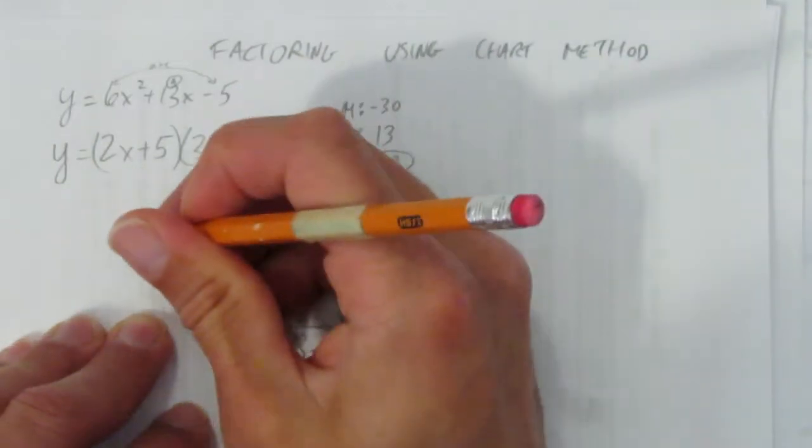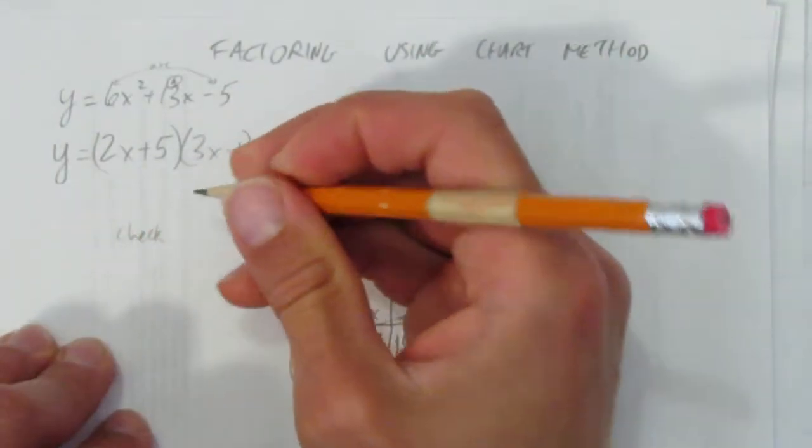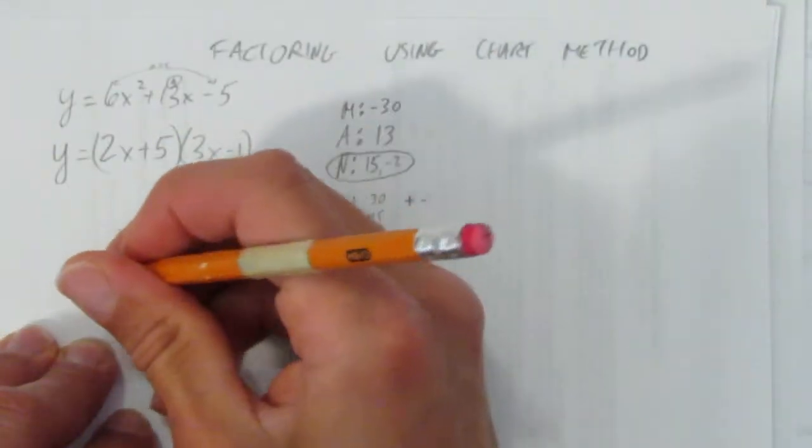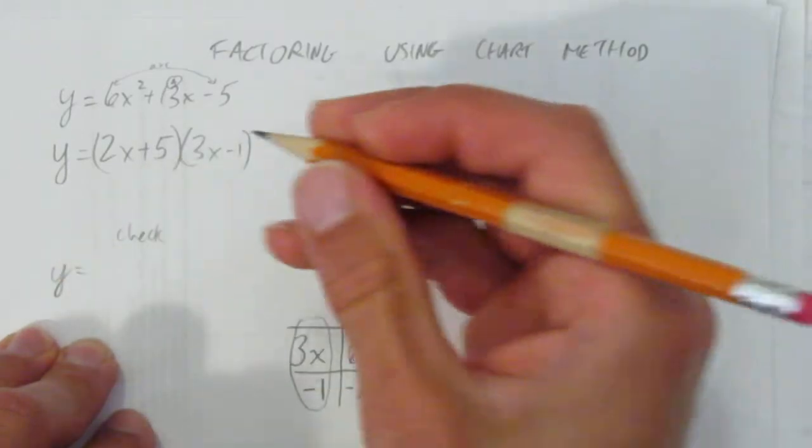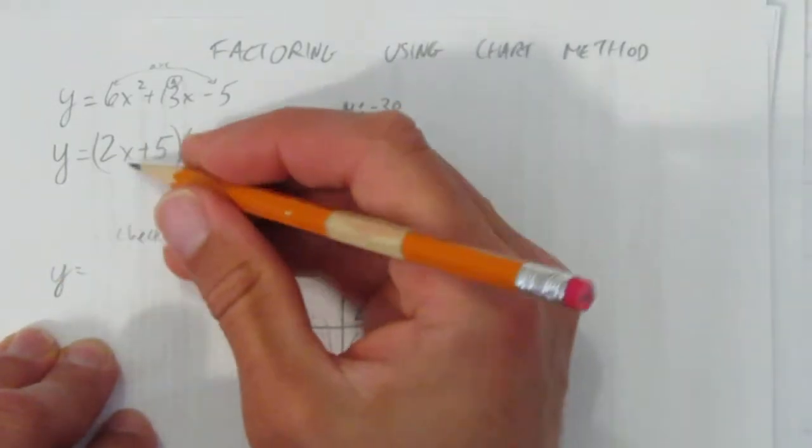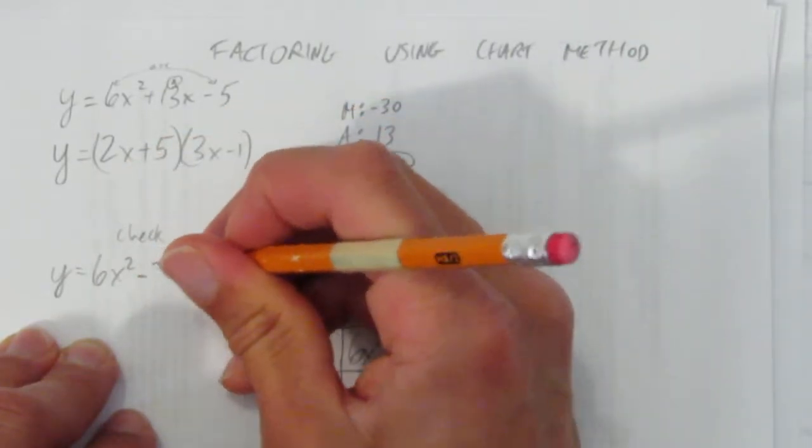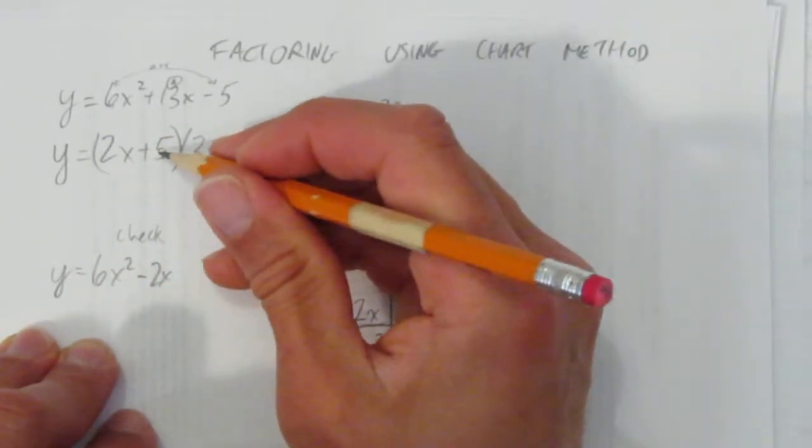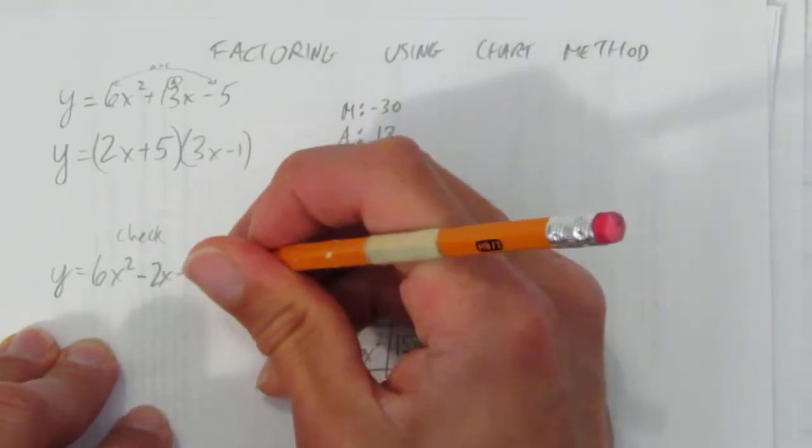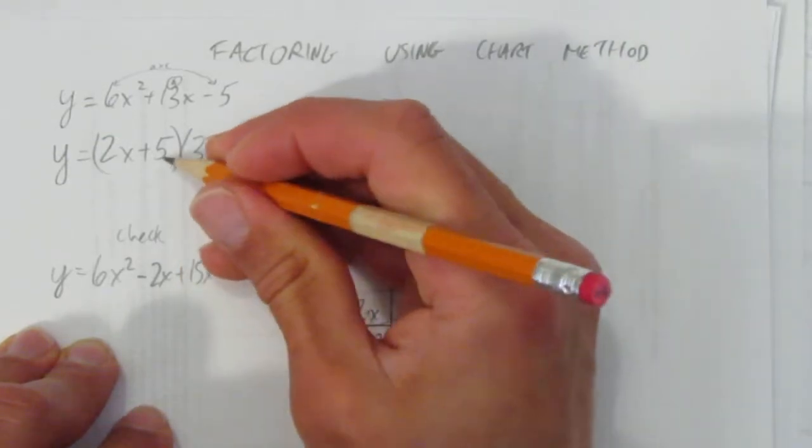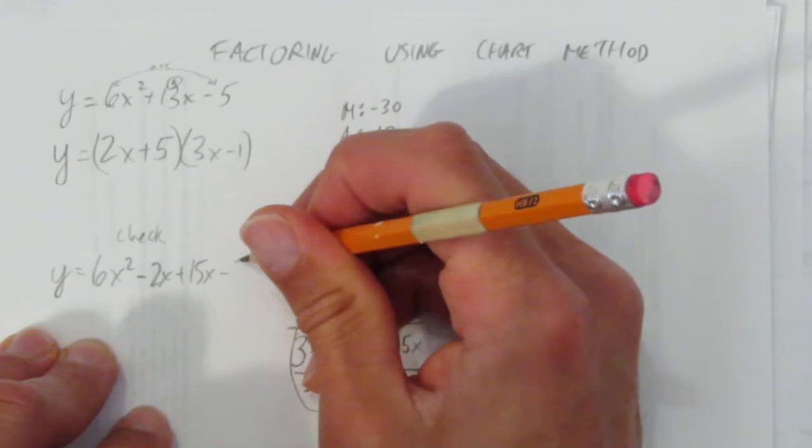You can even check that answer if you want by foiling. You can watch the video on foiling. This is first times first. 2x times 3x is 6x squared. 2x times negative 1 is negative 2x. 5 times 3x is plus 15x. And 5 times negative 1 is negative 5.